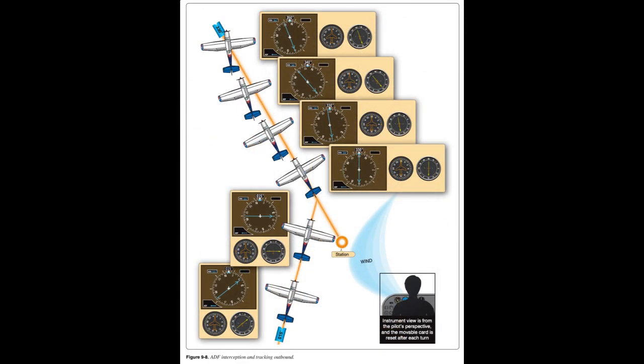To track outbound, the same principles apply — needle moving left equals wind from the left, needle moving right equals wind from the right. Wind correction is made toward the needle deflection. The only exception is while the turn to establish the WCA is being made, the direction of the azimuth needle deflections is reversed. When tracking inbound, needle deflection decreases while turning to establish the WCA, and needle deflection increases when tracking outbound.